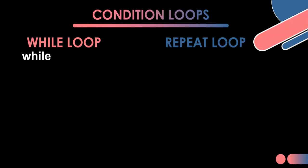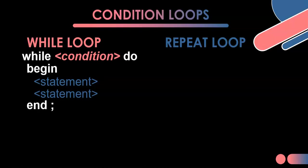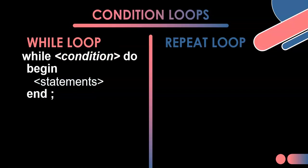The while loop has the 'while' keyword, then a condition, then the 'do' keyword, and after that a statement it will repeatedly execute based on that condition. A second statement would not be attached to the while loop — it would execute separately. If we want to do multiple statements in a while loop, we put in a 'begin' and 'end.' That's the basic structure of a while loop.